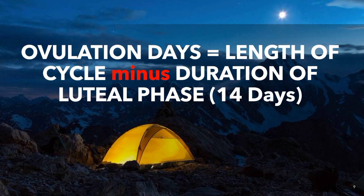So in calculating our ovulation day, we just subtract 14 days from the length of our cycle. You will appreciate why it is very important that you know the duration of your own cycle.